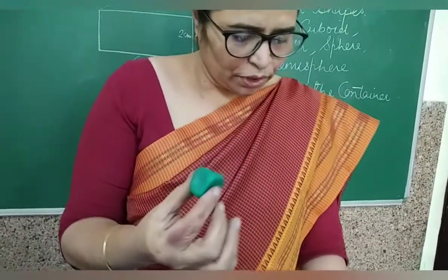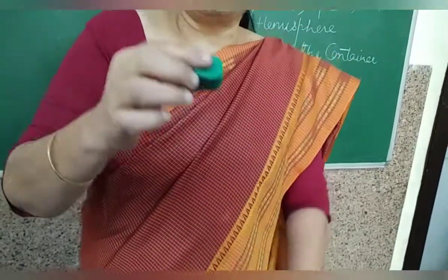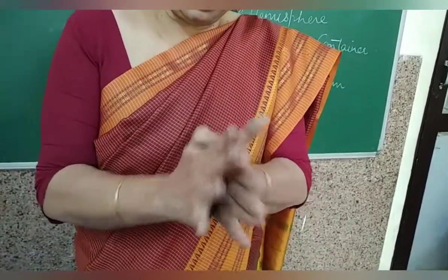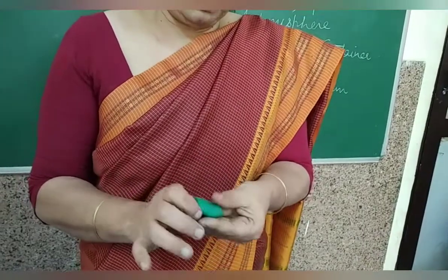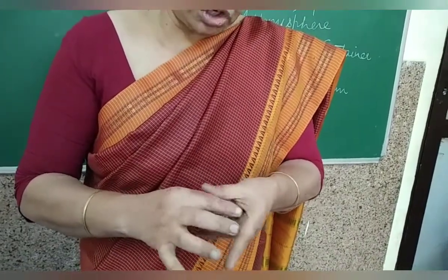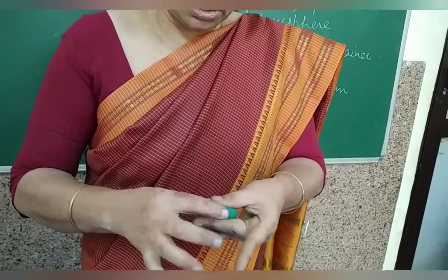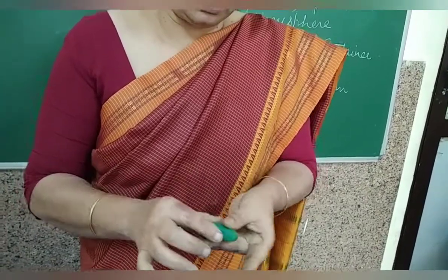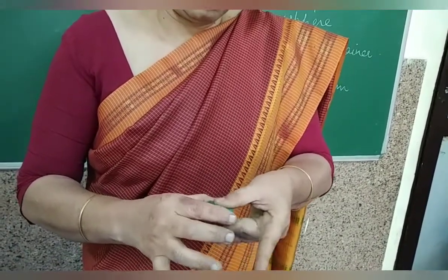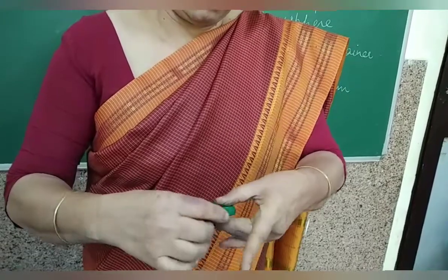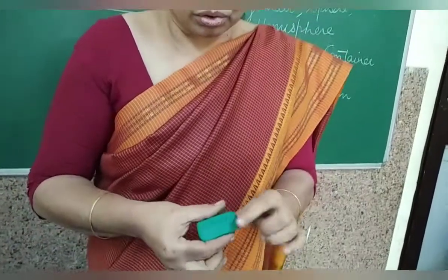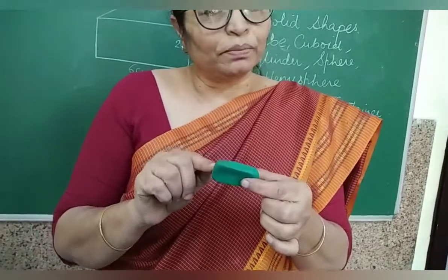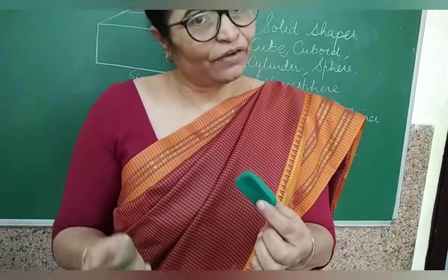This is a cube. Here this is a cuboid. If I want to convert it into a cuboid again — see, this will be a cuboid of the same shape, same size, same length, breadth, and height. I have converted it into this. So the volume is the same; only the shapes have changed.